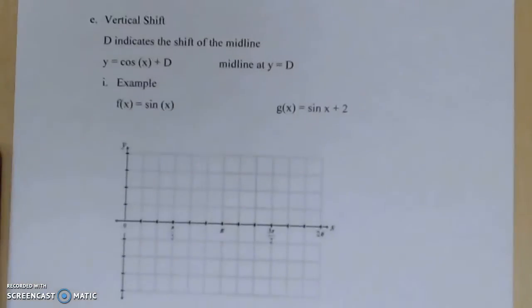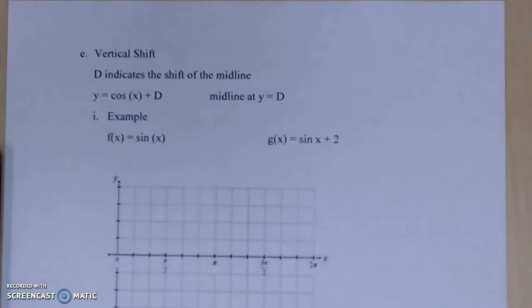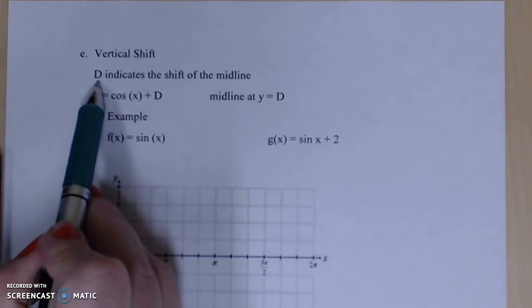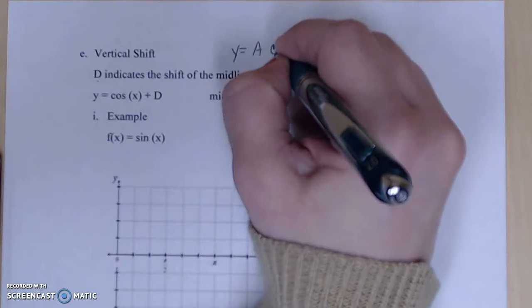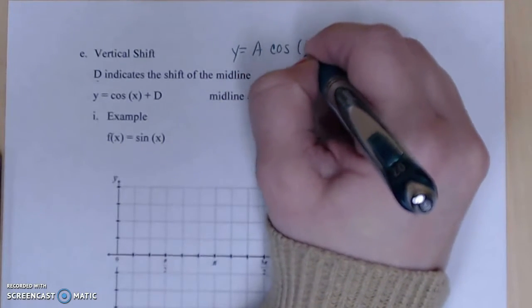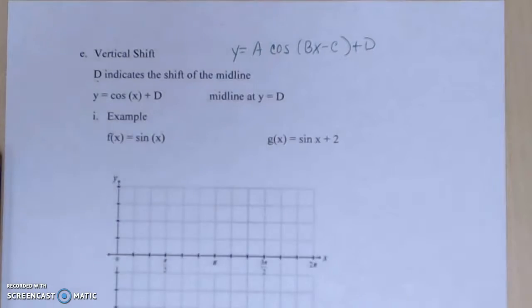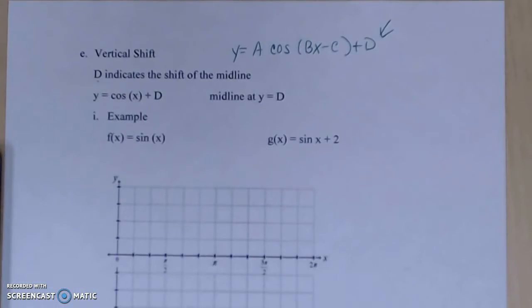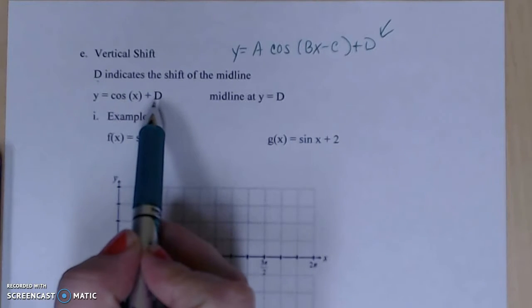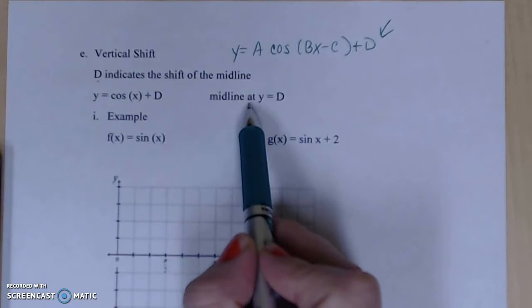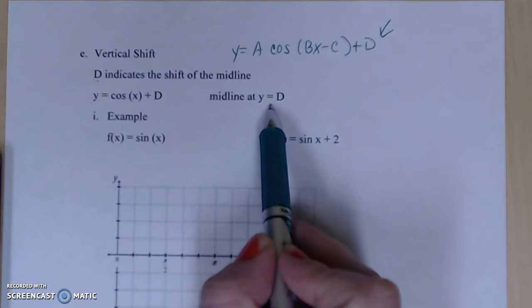So we have something known as also a vertical shift. So now this brings in D. D indicates – and again, we're looking at Y equal to possibly cosine of BX minus C plus D. So now this D brings in the vertical shift. And so if I take my cosine function and add D to it – I'm not going to talk about A, B's or C's right now, just the letter D – we can say that the midline is at the equation Y equal to D.